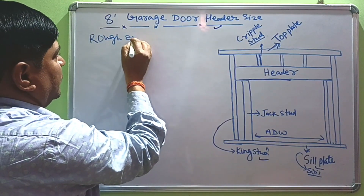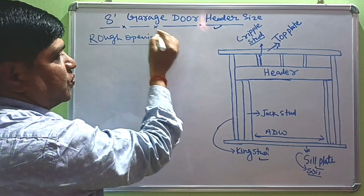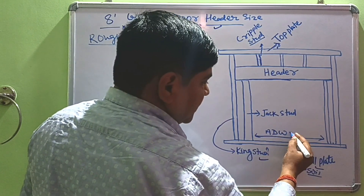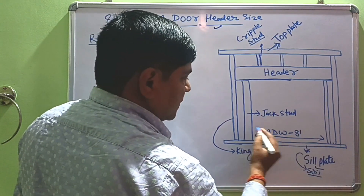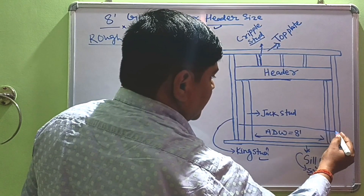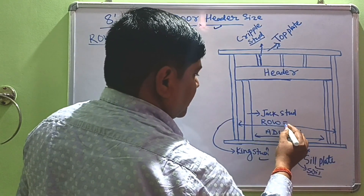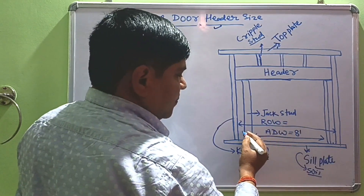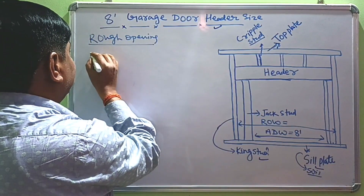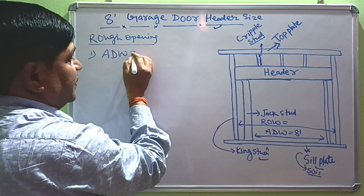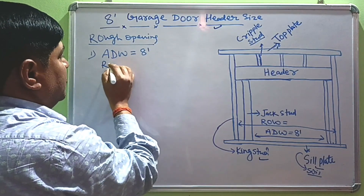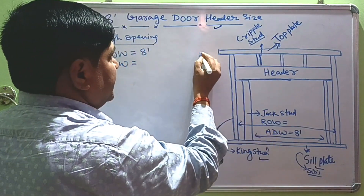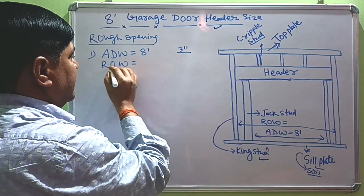In this video, first we talk about the rough opening of an 8-foot garage door. Here we have seen that this is the actual door width, which is about 8 feet. The rough opening is the total door width including the door frame. The rough opening width of a garage door is generally 3 inches more than the actual door width, so the rough opening width will be 8 feet 3 inches.